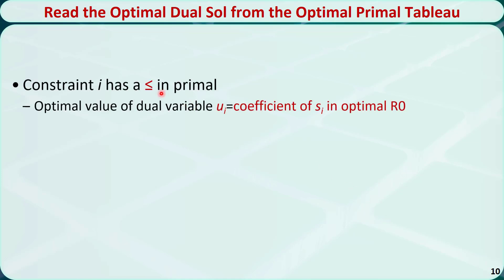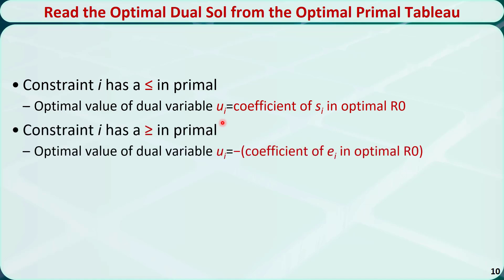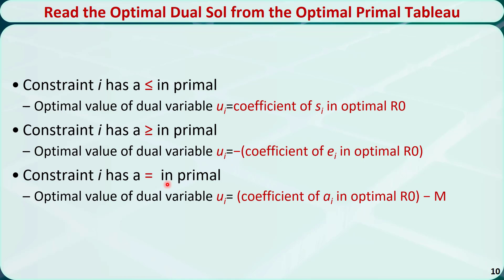There is another way to find the optimal dual solution quickly by reading the optimal primal tableau. If constraint i has a less than or equal to sign in the primal, the optimal value of dual variable ui equals the coefficient of slack variable si in row 0 of the optimal primal tableau. If constraint i has a greater than or equal to sign, ui equals minus the coefficient of excess variable ei in row 0. If constraint i has an equal sign, ui equals the coefficient of artificial variable ai in row 0 minus M.